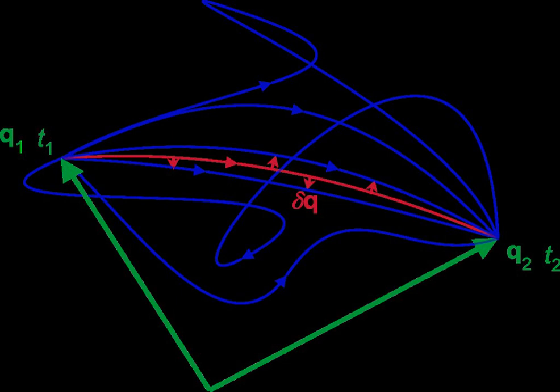General statement: The starting point is the action, denoted S, calligraphic S, of a physical system. It is defined as the integral of the Lagrangian L between two instants of time t1 and t2, technically a functional of the n generalized coordinates.